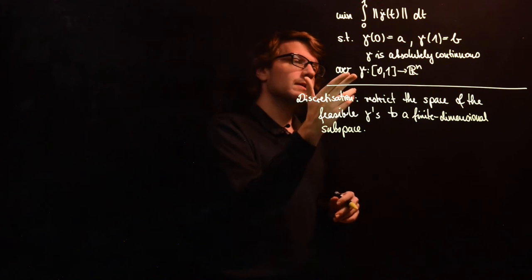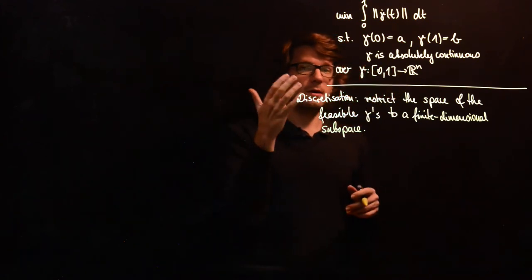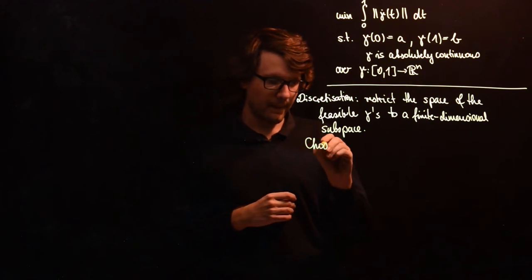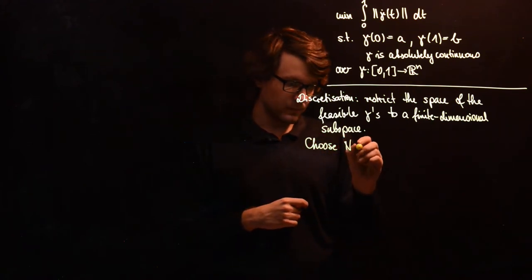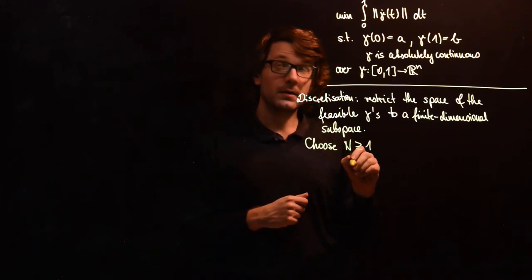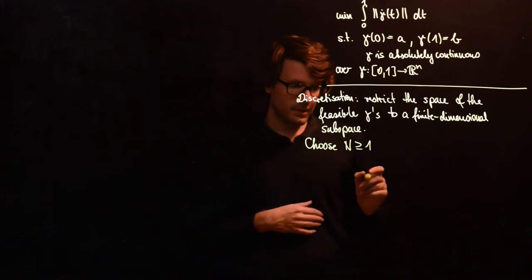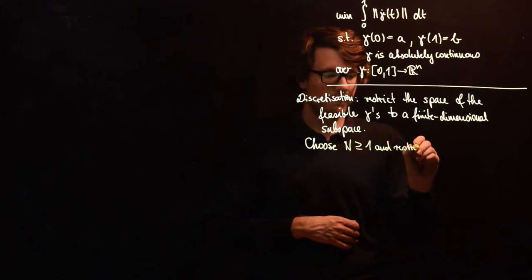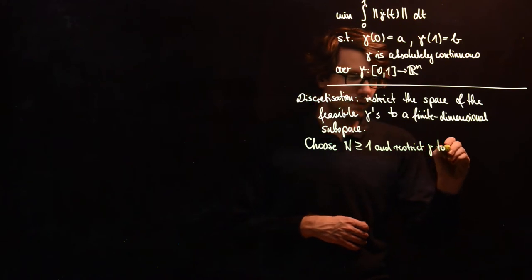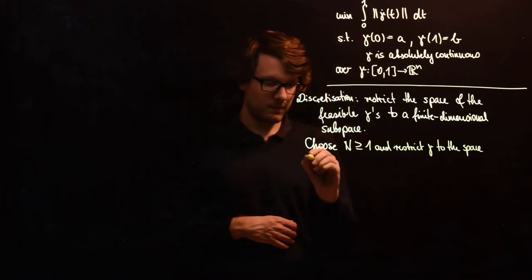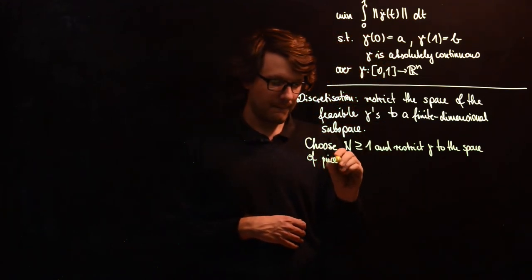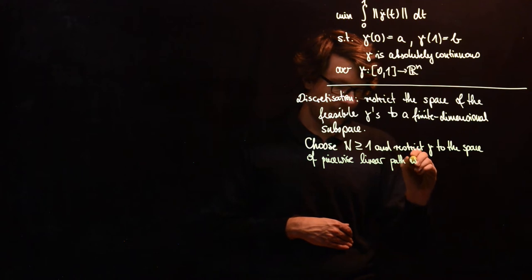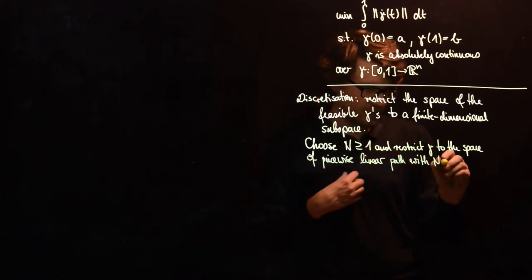The idea is to restrict yourself to only those gamma which are piecewise linear. And to this end choose some number N, a natural number preferably greater or equal than 1, and restrict gamma to the space of piecewise linear paths with N support points.